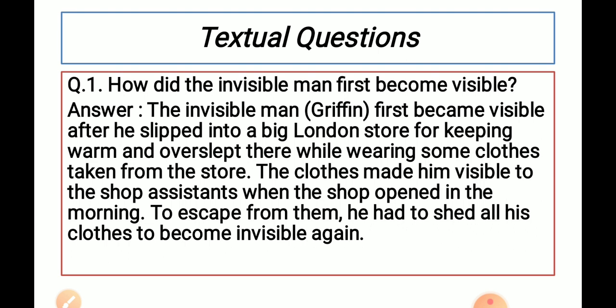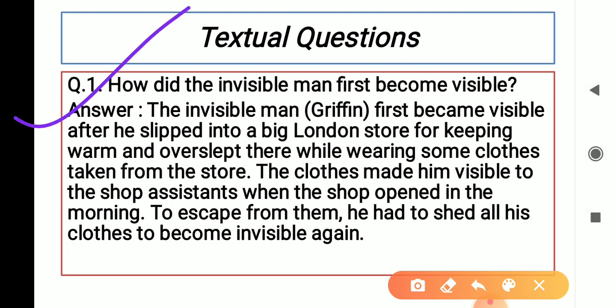So let's start with question number 1: How did the invisible man first become visible? तो सबसे पहले कब वो visible हुआ था? The invisible man — you know very well his name was Griffin — first became visible after he slipped into a big London store for keeping warm.